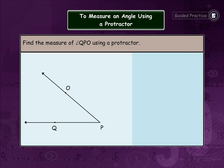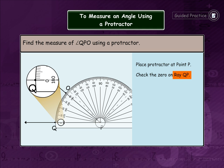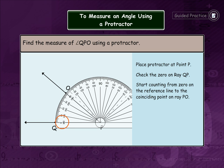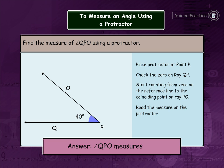Let's try another example. Find the measure of angle QPO using a protractor. Place the protractor at point P. Check the zero on ray QP. Start counting from zero on the reference line to the coinciding point on ray PO. Read the measure on the protractor. Angle QPO measures 40 degrees.